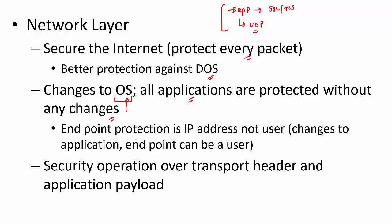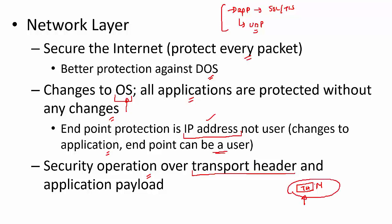However, this requires kernel-level changes. One other point to note is that the endpoint in network layer security is an IP address and not a user. But if you can change the application, the endpoint can be a user. When you provide security at the network layer, the security operations — that is, encryption and integrity checks — will be over the transport header and application payload. So the application sends some message M, a transport layer header is added (UDP, TCP, etc.), and you are providing security over all of this.